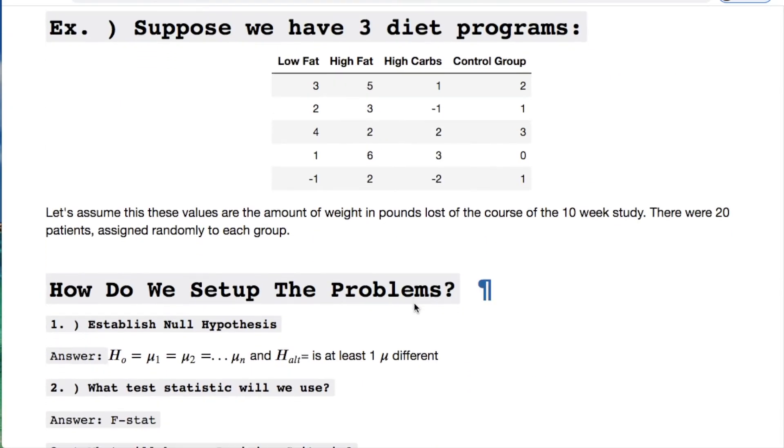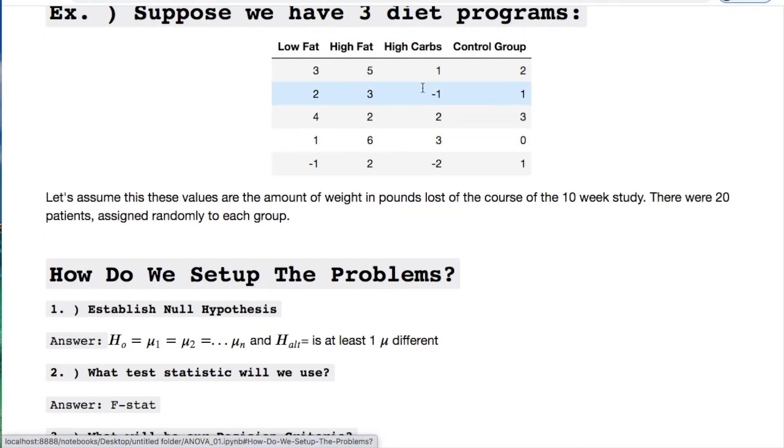Here's our example we're going to work with. Assume that we have three diet programs and a control group and this is measuring the amount of pounds these people lost during a 10-week study. This is made up data. We're assuming there were 20 patients chosen randomly to go into these four groups, meaning that we have five people per group. So here's the data.